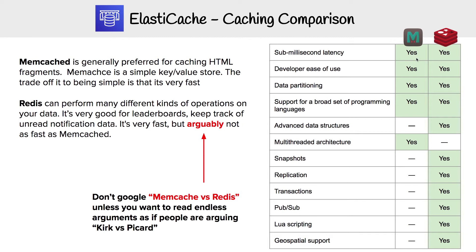But it really comes down to your use case. Memcached is generally preferred for caching HTML fragments — it's a simple key-value store. That trade-off is that even though it's simpler and has fewer features, it's going to be extremely fast. Redis, on the other hand, has different kinds of operations and different data structures available to you.